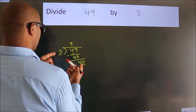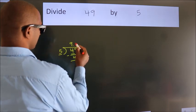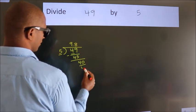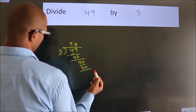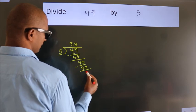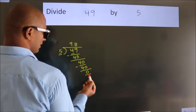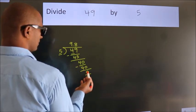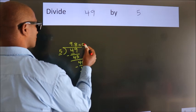When do we get 40 in the 5 table? 5 eights, 40. Now we subtract. We get 0. We got remainder 0. So this is our quotient.